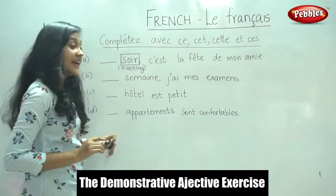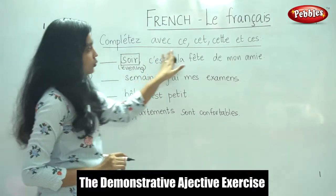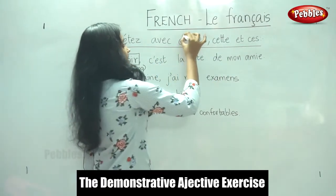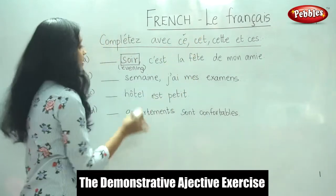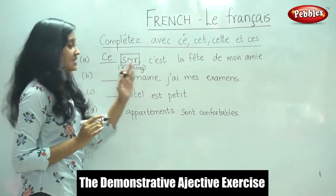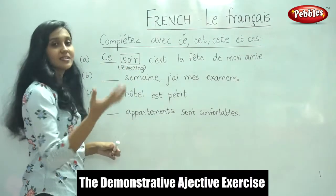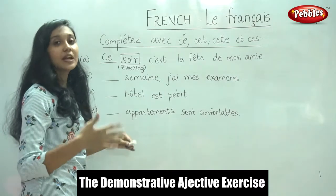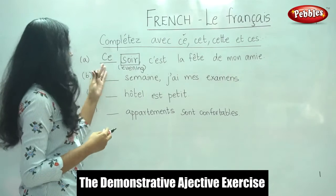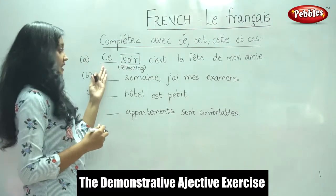So which of these four words would we use when the noun is in the masculine singular form? Yes, we would use 'ce'. Ce soir — this evening. After reading many sentences like this, you won't need to think about whether the noun is singular or plural; it will come automatically. So for the first answer, it is ce soir.